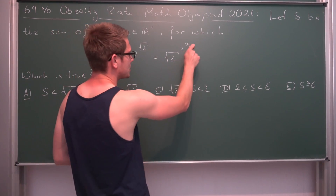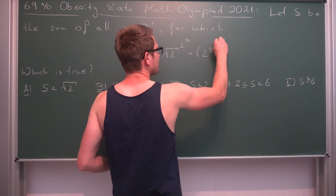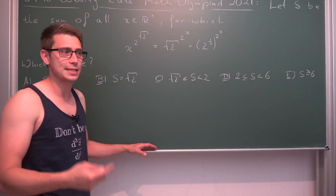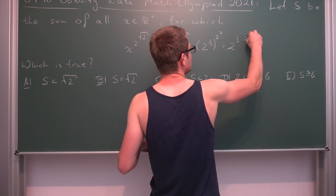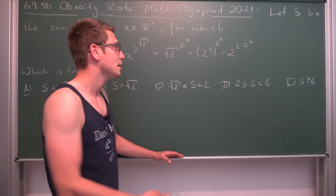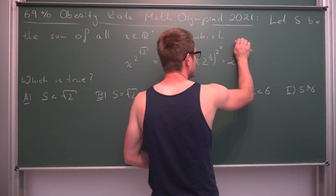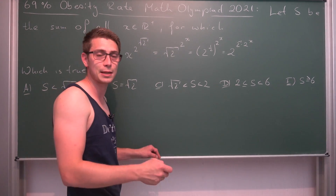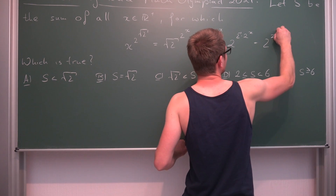On the right hand side, notice that square root of 2 is the same as 2 to the one-half power. So this is actually 2 to the one-half power to the 2 to the x. Making use of exponentiation rules — a to the n to the m is the same as a to the n times m — this gives us 2 to the one-half times 2 to the x. Since one-half is 2 to the negative one, and using the rule for multiplying same bases with different exponents, we get overall 2 to the 2 to the x minus 1.